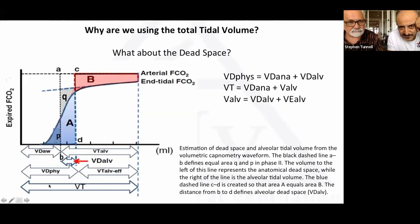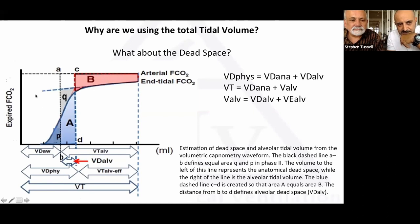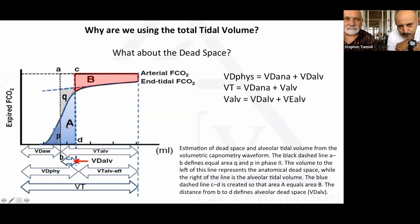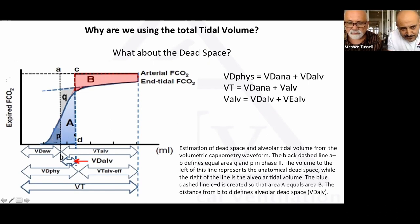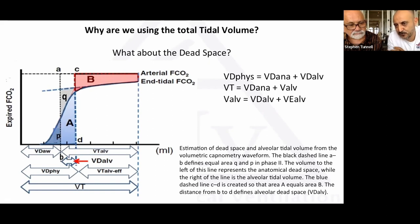So we used volumetric capnometry — CO2 versus volume — which gives three phases. This allows identification of anatomical dead space and total alveolar tidal volume. By plotting the phase 2 bisector line between points A-B and C-D, you can divide the curve into regions Q and P, separating anatomical dead space from tidal dead space.